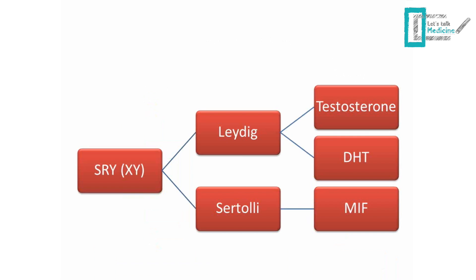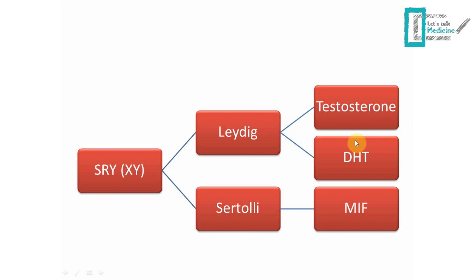What about males? In genetics, a male is defined by having the Y chromosome. The Y chromosome has a region called the sex-determining region, SRY. This encodes many hormones and, through a sequence of events, results in Leydig cells and Sertoli cells. Sertoli cells produce MIF — Müllerian inhibiting factor — while Leydig cells produce testosterone. Testosterone is also converted to dihydrotestosterone, though DHT does not come directly from Leydig cells.